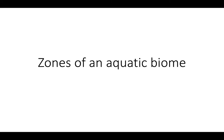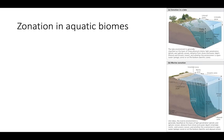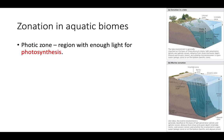This video is about the zones of an aquatic biome. In aquatic biomes we have something called zonation. The photic zone is the region with enough light for photosynthesis to take place. Looking at this diagram, this top layer is the photic zone where light can penetrate and photosynthesis can actually occur.